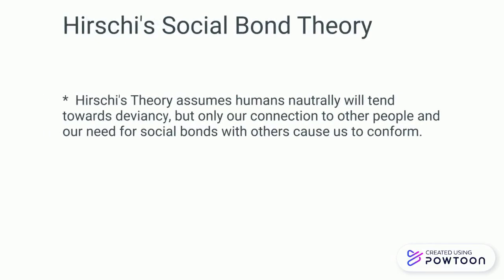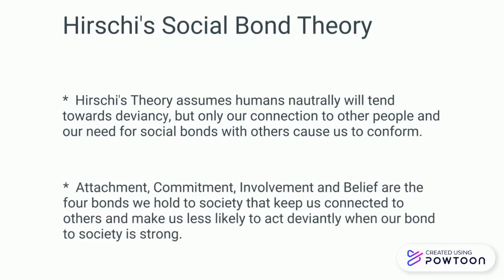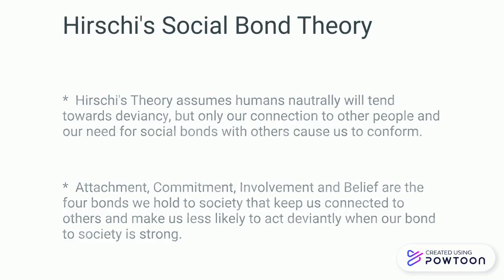Hirschi's social bond theory. Hirschi's theory assumes humans will naturally tend towards deviancy, but only our connection to other people and our need for social bonds with others causes us to conform. Attachment, commitment, involvement, and belief are the four bonds we hold to society that keep us connected to others and make us less likely to act deviantly when our bond to society is strong.